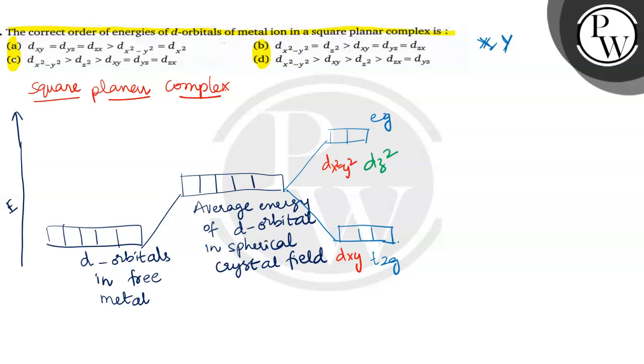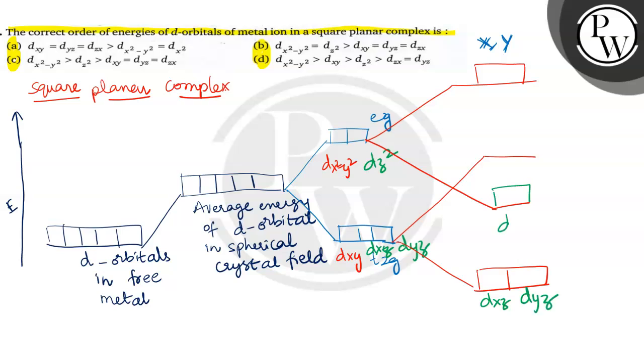dz² orbital, dxy, dyz, dxz, these orbitals are low energetic. So the splitting takes place like this: low energetic dxz and dyz and dz² orbitals, and dxy, dx² - y² orbitals are having higher energy.